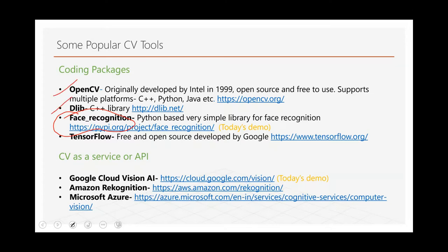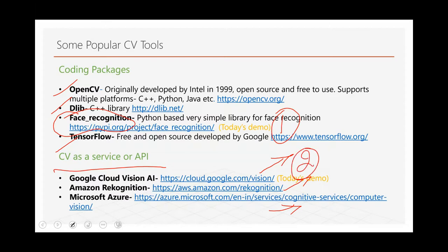There are also plug-and-play services from pretty much all the big tech companies — this is not a comprehensive list. I will do a demo of the Google Cloud Vision AI, which is very simple and fun to use. You may find something useful right away. There's also Amazon Rekognition, Microsoft Azure, and services from IBM, NVIDIA and others. I'll talk about two specifically: face recognition demo using Python, and the Google API. I'll begin with the Google API because it's the most basic — you don't need to write even one line of code.